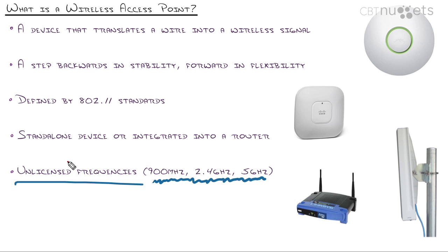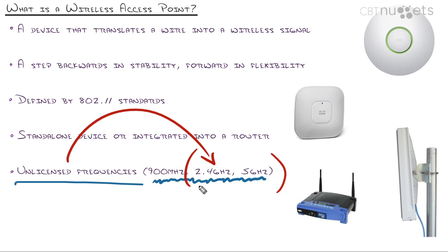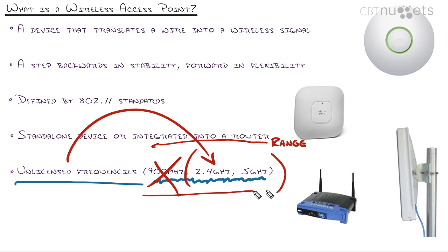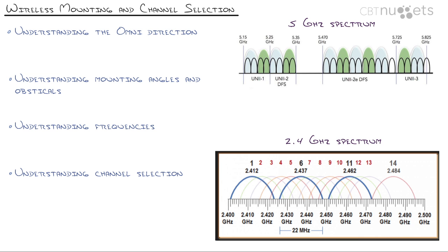The only problem with unlicensed frequencies is that if your neighbor is using them and causing interference and crosstalk, there's nobody to complain to. Nobody really uses 900 MHz for wireless networks — it's too slow. The more you go toward lower frequencies, the more range you get but the slower the connection. The more you go toward higher frequencies, the more your range is limited but you get faster speeds.